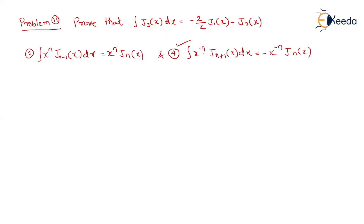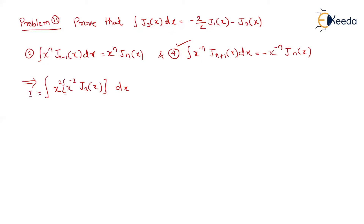Now in Formula 4, ignore the minus sign. Whatever you write as n plus 1 here should match — so if here it is 2, it has to be 3 there. The problem is J3(x). To apply Formula 4, I must have x raised to minus 2. So the adjustment is: write x raised to minus 2 into J3(x), then multiply by x squared. These two terms cancel each other and we are left with J3(x). This converts the integral into the Formula 4 format.